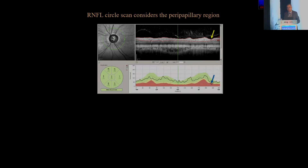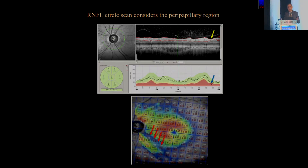The nerve fiber layer circle scan — and the images I'm showing are from the Heidelberg machine, and I have no financial interest with Heidelberg Engineering — shows everything is normal right here. But that's not telling you everything is normal; it's the average of that quadrant that is normal. That's why you have to look at the raw scans and look at the focal loss. It is easy to miss, because naturally we are all going to go to the kindergarten level when we've got hundreds of patients and see where it is green or red. But if you look at the macular thickness of the same eye, you won't miss this loss of tissue corresponding to the nerve fiber layer thickness.